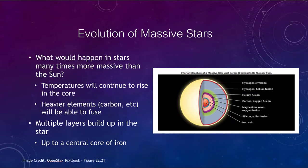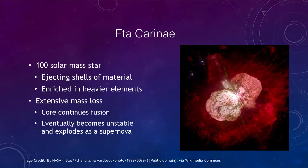Let's look at an example. The star Eta Carinae is an example of a very massive star, right at the limit of 100 solar masses, about as massive as a star can possibly be. It is ejecting material out into space and that material is enriched in heavier elements. This is going through all of those stages right now and building up heavier elements in its core. There is extensive mass loss going on, and while the core continues to fuse elements, eventually this will become unstable, produce iron in its core, and become a supernova.